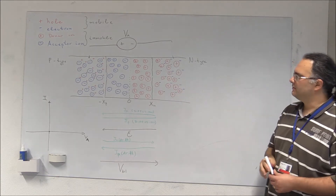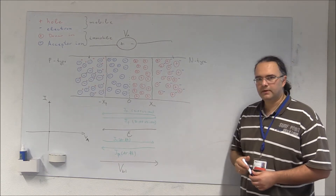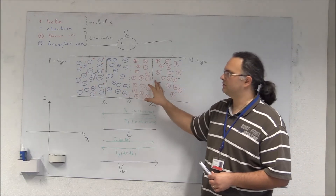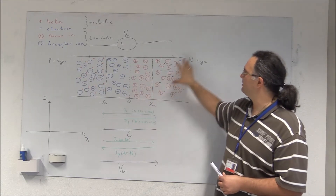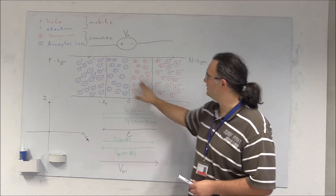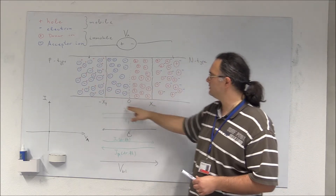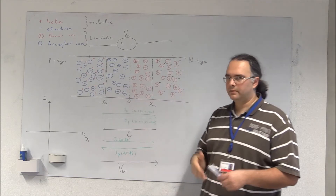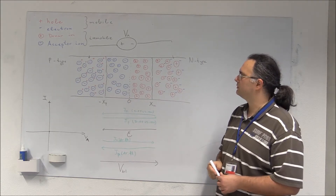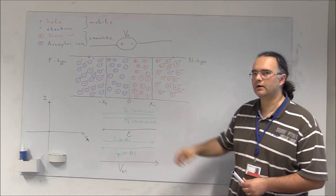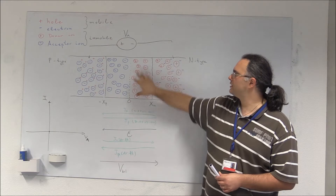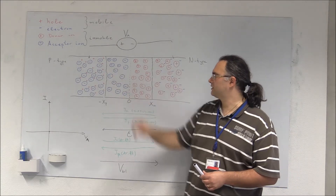In this diagram, which you can also find in my previous videos, we have the PN junction — what happens when we connect an N-type material with a P-type material. This is the depletion region, where in thermal equilibrium there are no mobile carriers, holes or electrons, but only immobile ions.